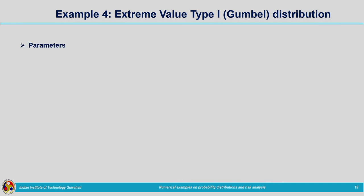The parameters are given by: α = 1.28255 / s and β = x̄ − 0.45005·σ, where s is the sample standard deviation and x̄ is the sample mean. First we must calculate the mean and standard deviation from the 12-year data.